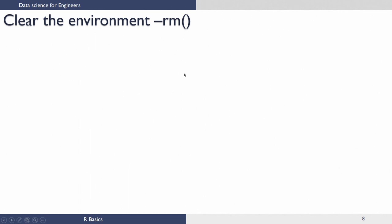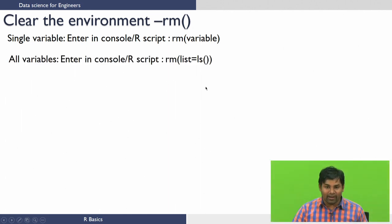Now let us see how to clear the variables from the R environment. You can clear the variables from the R environment using the rm command. When you want to clear a single variable from the R environment, you can use the rm function as shown here: rm followed by the variable you want to remove. If you want to delete all the variables that are there in the environment, you can use rm with the argument list equals ls followed by parentheses, or you can clear all the variables in the environment using the GUI.